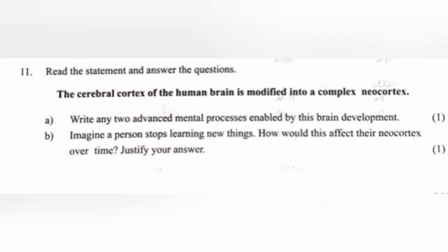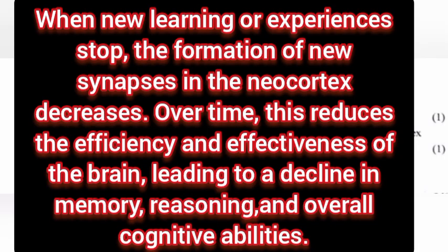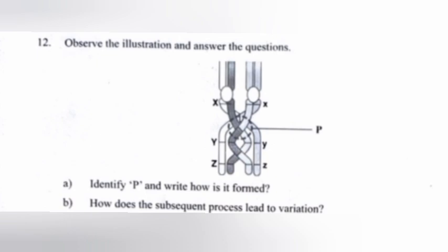Part B: Imagine a person stops learning new things. How would this affect the neocortex over time? Justify your answer. Answer: When new learning or experiences stop, the formation of new synapses in the neocortex decreases. Over time, this reduces the efficiency and effectiveness of the brain, leading to a decline in memory, reasoning, and overall cognitive abilities.